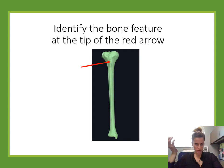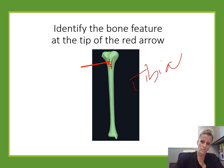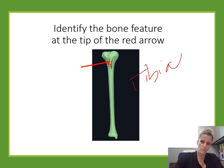Identify the bone feature. This is the tibia — which looks like a T, wider at the top and thinner going down. On the tibia there's a roughened patch called the tibial tuberosity.